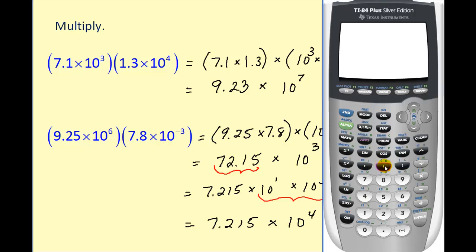To check this on the graphing calculator, we open parentheses and type in 9.25. Pressing second-comma gives a capital E, which stands for scientific notation. We type in the exponent on the 10, then do the same for the second number: 7.8, second-comma, negative 3. Closing the parentheses and pressing enter gives the answer in decimal form, and we can see that converting it to scientific notation matches our answer.